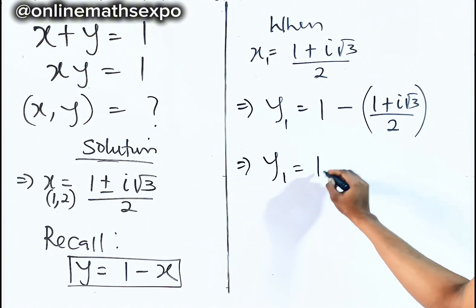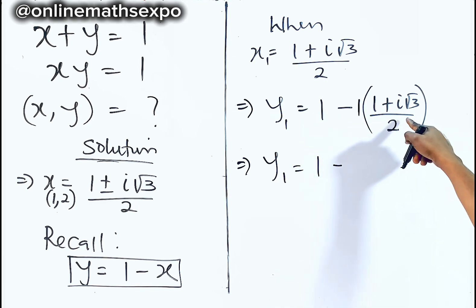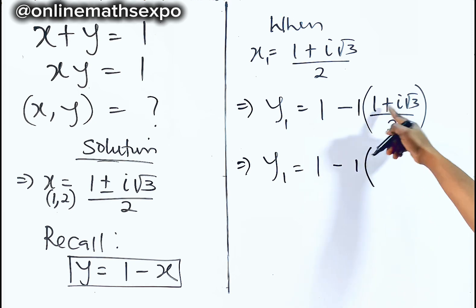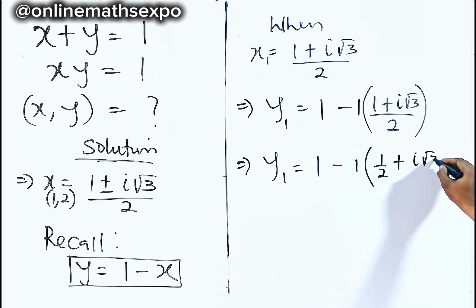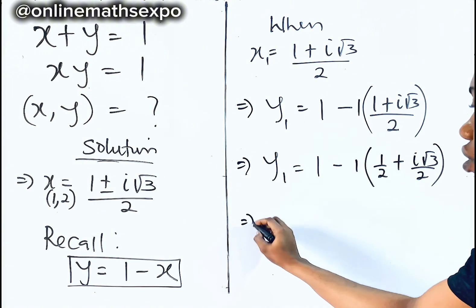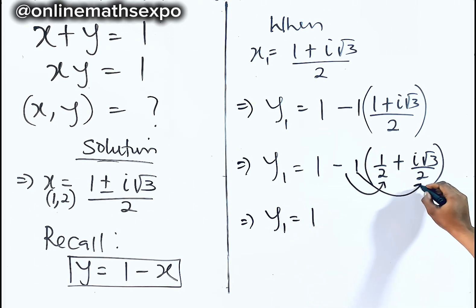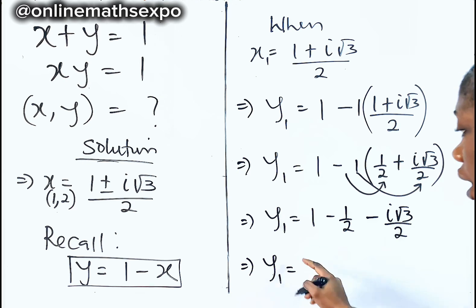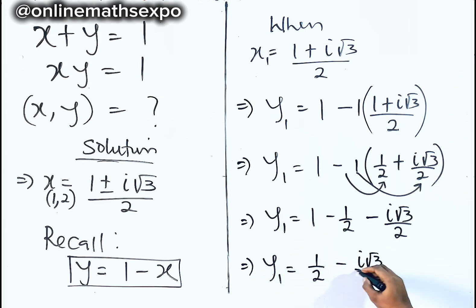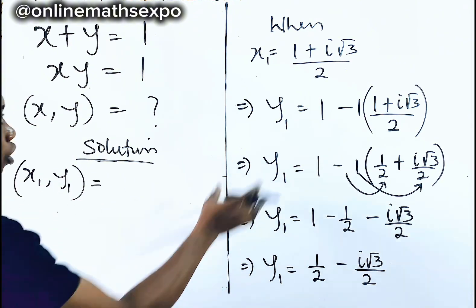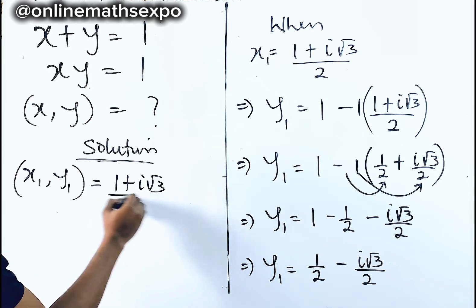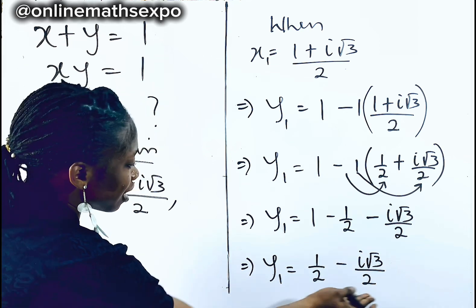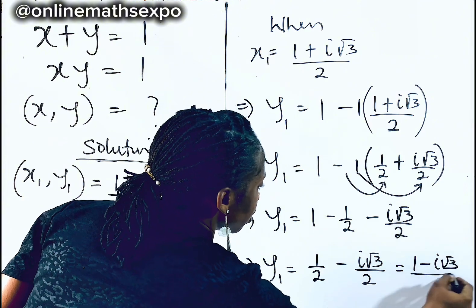Simplifying: y equals 1 minus 1 times one half plus i root 3 divided by 2. Distributing negative 1 gives negative one half minus i root 3 divided by 2. So y equals 1 minus one half minus i root 3 divided by 2, which simplifies to one half minus i root 3 divided by 2. Gathering these, the first value of x is 1 plus i root 3 divided by 2, and its corresponding y is 1 minus i root 3 divided by 2.